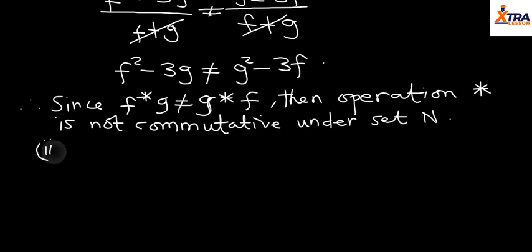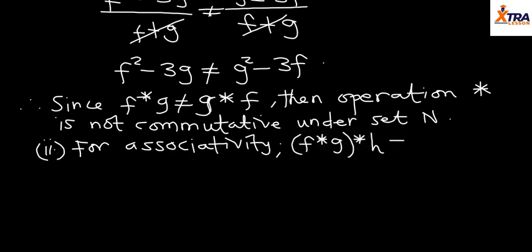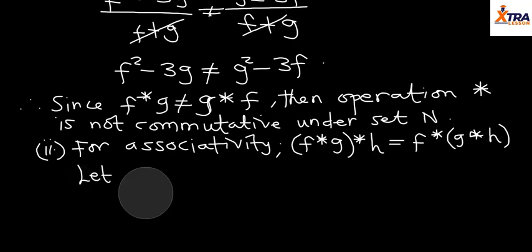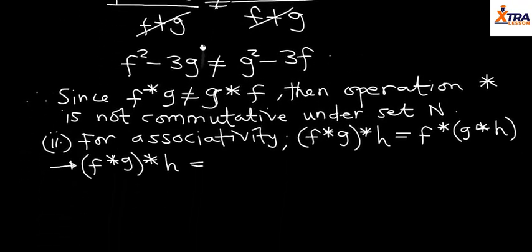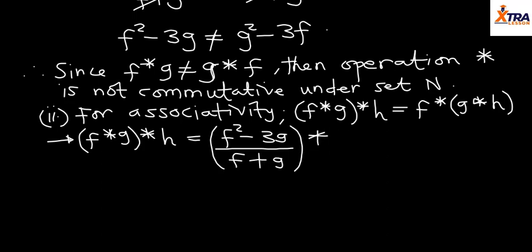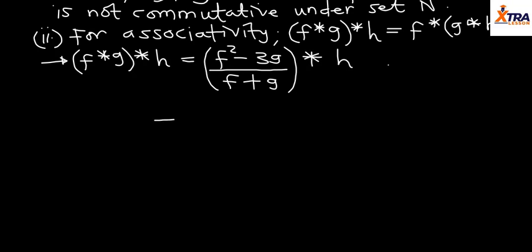For associativity, we introduce a third variable. We need to determine if (f★g)★h equals f★(g★h). We consider three variables f, g, and h. For (f★g)★h, we start with the formula: f★g = (f² - 3g) / (f + g), and then apply the operation with h, where this result becomes our first element and h becomes our second element.